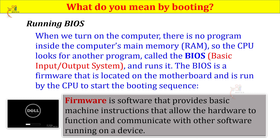Unlike regular software, you cannot simply install firmware anywhere — it is device-specific. For example, on Mac or Windows there are many applications like Word, MS Office, or Photoshop that you can install. But firmware is different: there is a different firmware program for different hardware devices. The firmware allows applications to communicate with the underlying hardware.